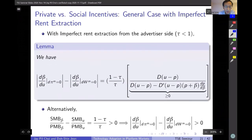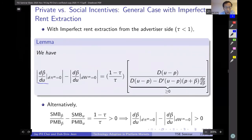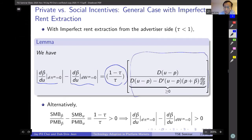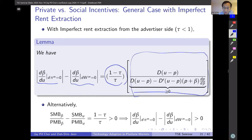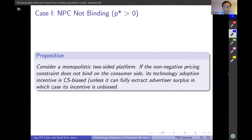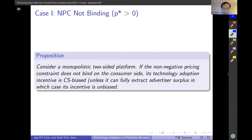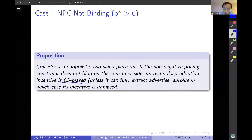We have a lemma comparing the slopes of the isoprofit and isowelfare curves. This expression includes the term we derived for inelastic demand, plus additional terms reflecting demand responses. This additional term is always positive, so it does not change the sign of the comparison. As a conclusion: if the non-negative price constraint is not binding — in other words, if the service is provided at a positive price — we always have CS-biased technology adoption by the platform. The only exception is when tau equals one, in which case there is no distortion.